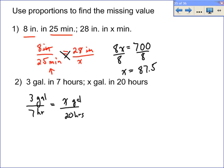So 3 gallons in 7 hours is equal to how many gallons in 20 hours? Well, you just do your cross product. And so it's going to be 7X equals 20 times 3, which is 60.